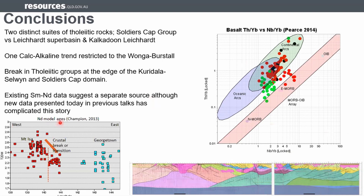This also seems to be supported by the Samarium-Neodymium data, which shows a step to more evolved rocks as we come across the Overhang Shear, separating group one from group two. Thank you.